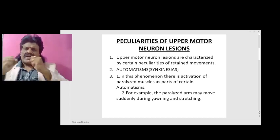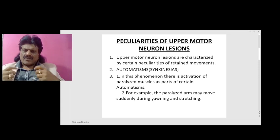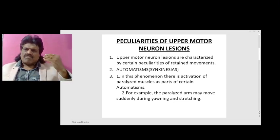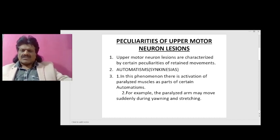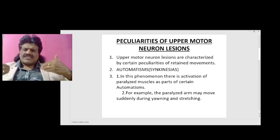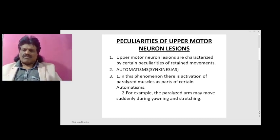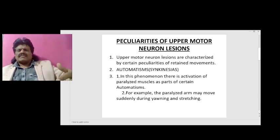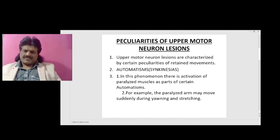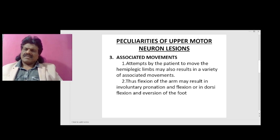The first peculiarity is automatisms or synkinesias. In this phenomenon, there is activation of paralyzed muscles as part of certain automatisms. For example, the paralyzed arm, which cannot be moved voluntarily, may suddenly move during yawning or stretching.